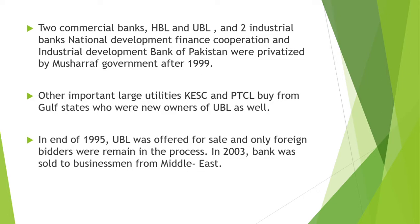The two commercial banks — HBL, the largest commercial bank, and UBL — along with two industrial banks, the National Development Finance Corporation and the Industrial Development Bank, were privatized under Musharraf's government after 1999. Important utility companies such as Karachi Electric and PTCL were also privatized by buying from Gulf States, who became the new owners.